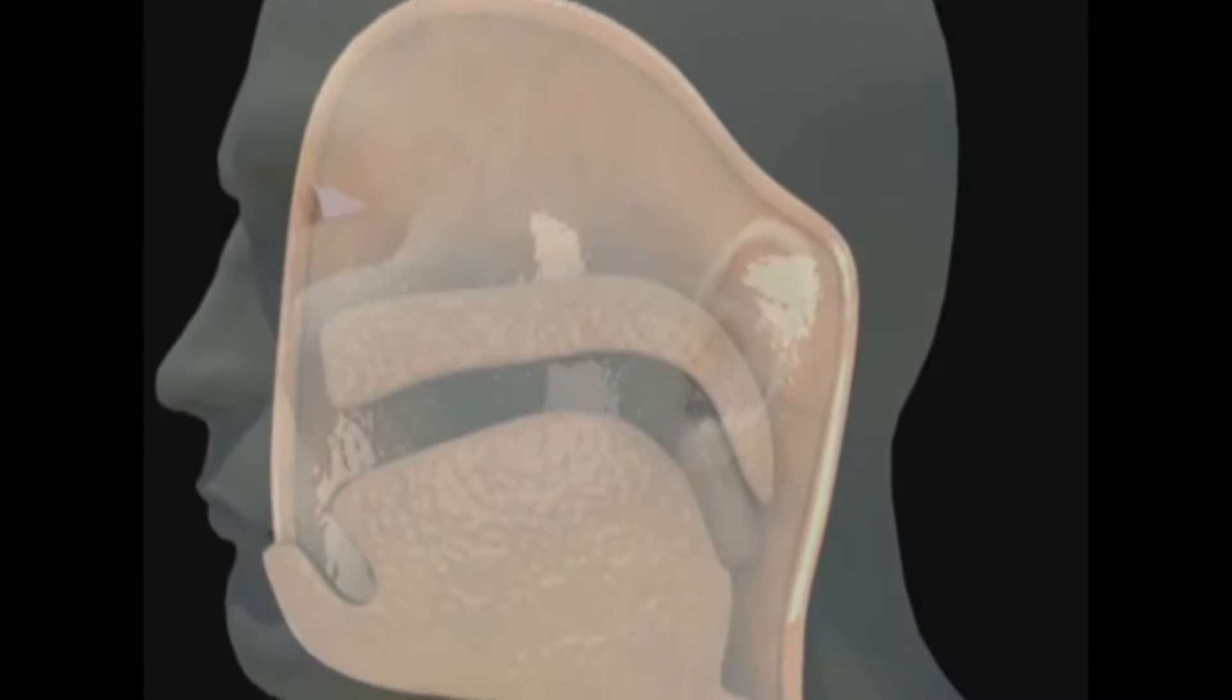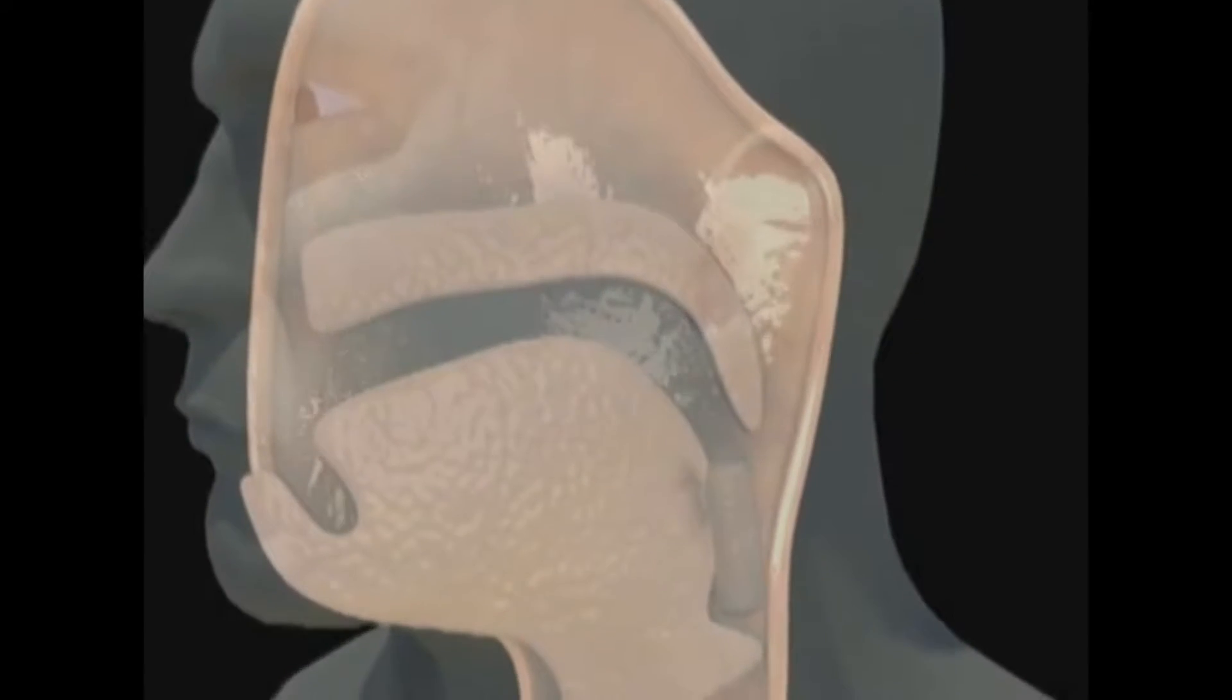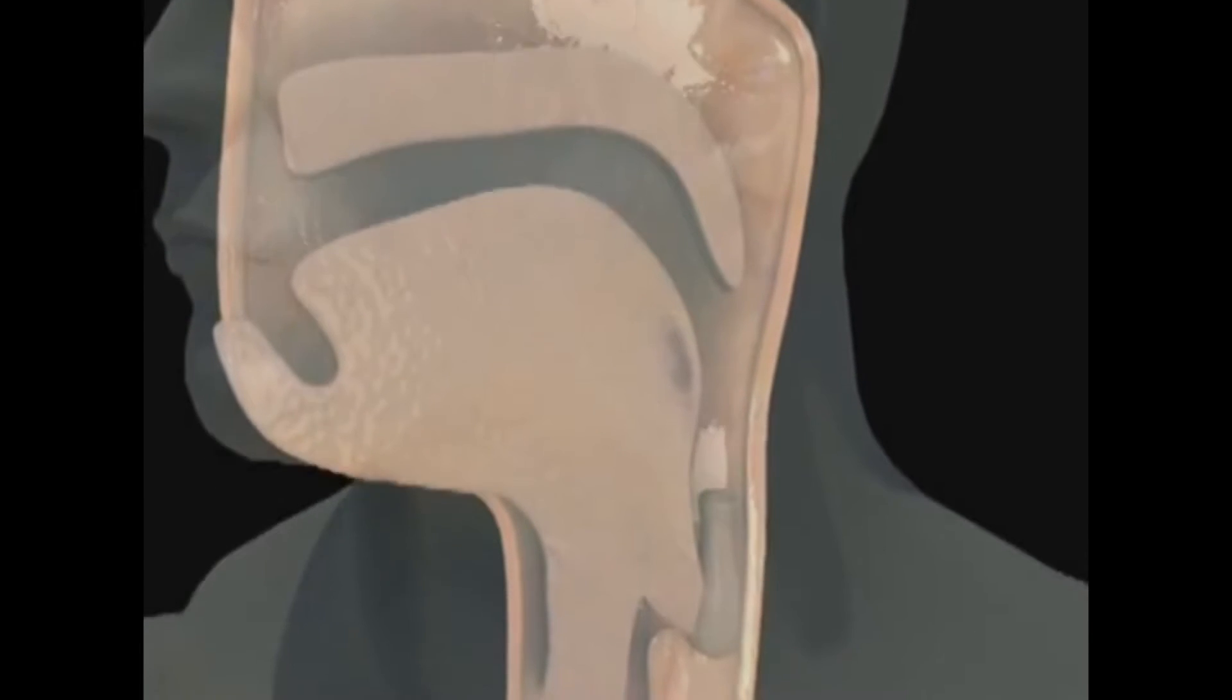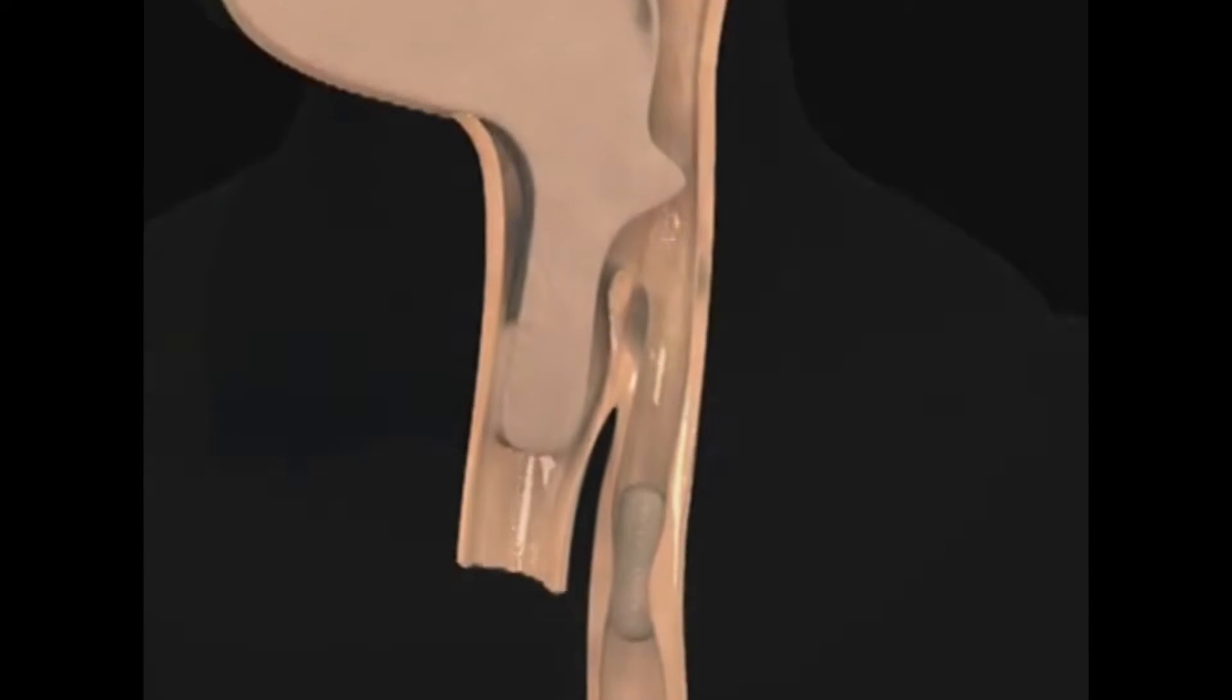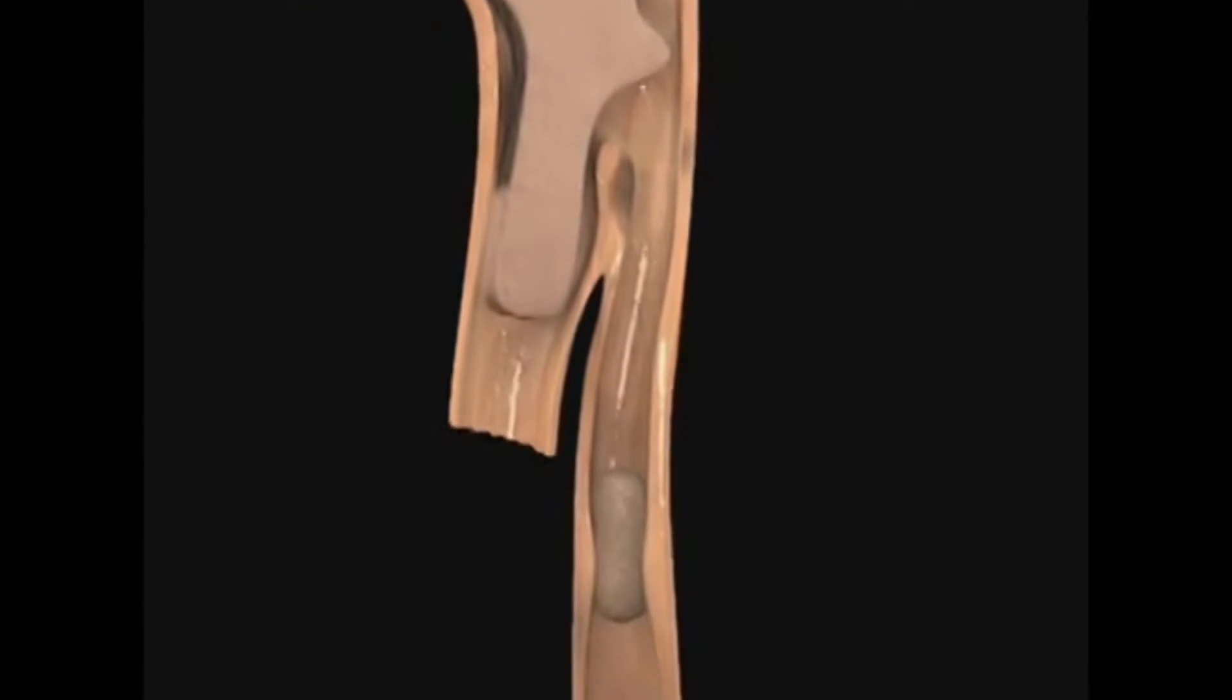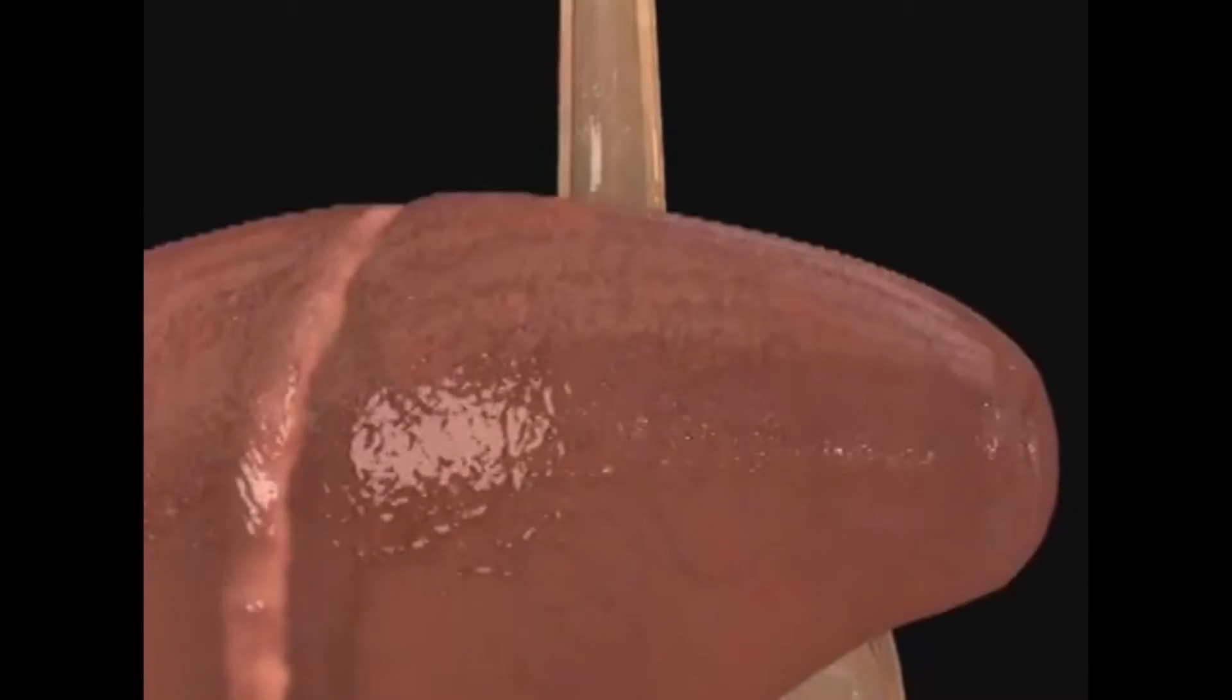Minor alcohol withdrawal symptoms often appear 6 to 12 hours after a person stops drinking. Sometimes a person will still have a measurable blood alcohol level when symptoms start. These symptoms include shaky hands, sweating, mild anxiety, nausea, vomiting, headache, and insomnia.